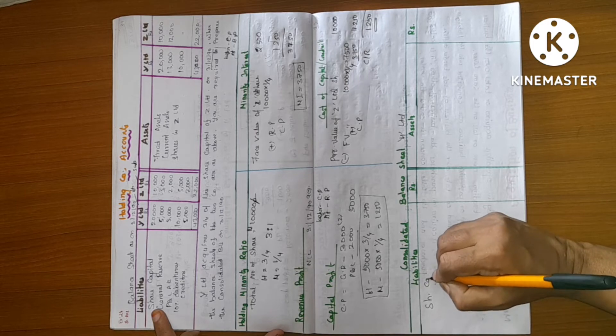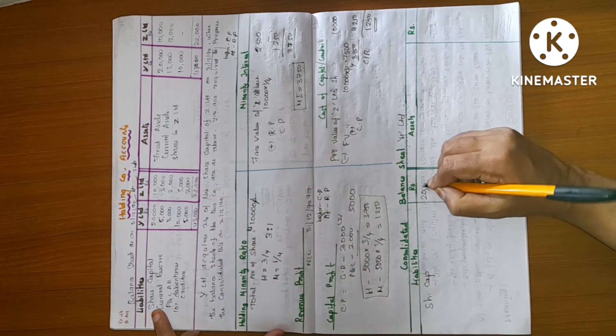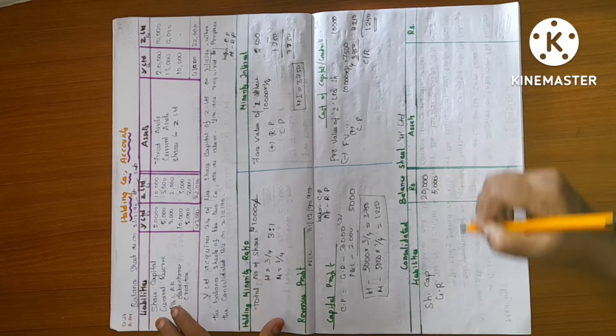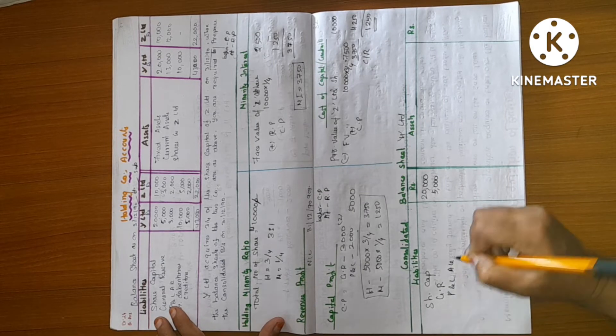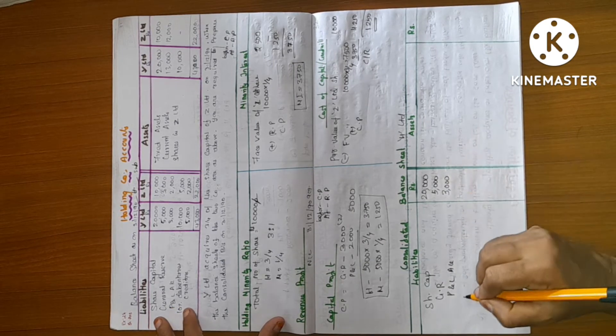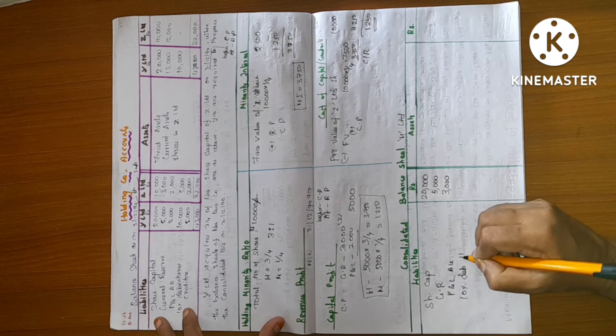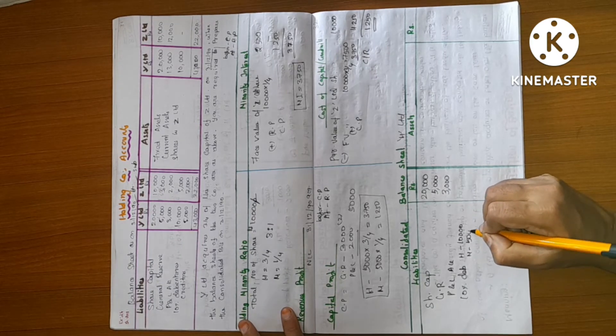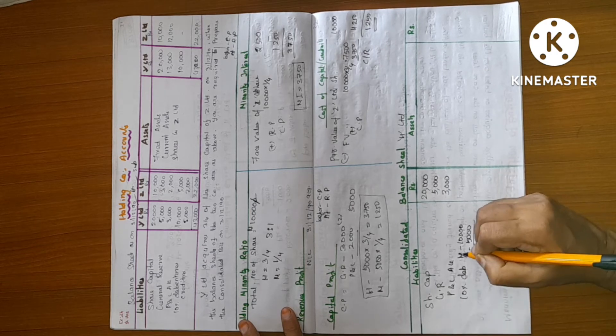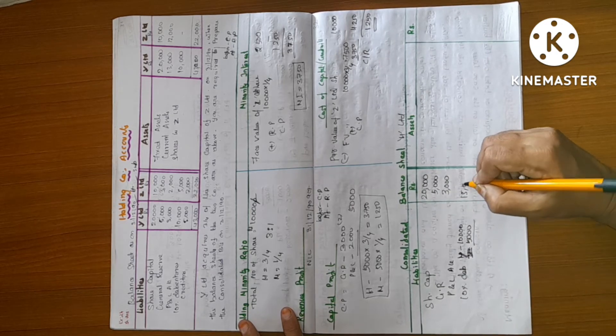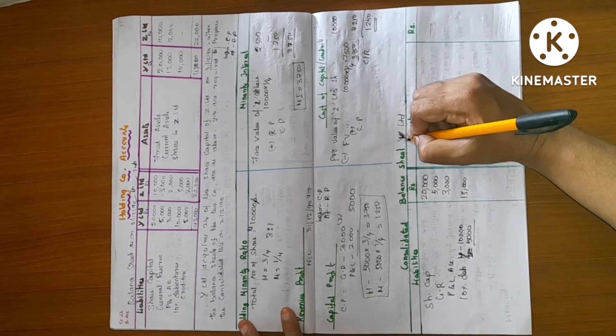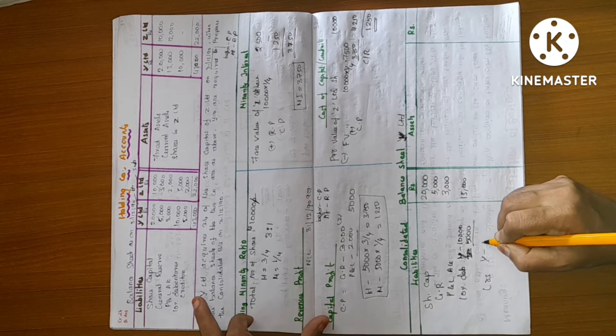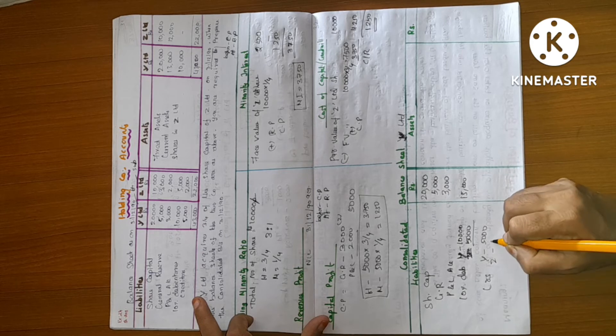Balance Sheet. Hedge Capital 20,000. General Reserve 5,000. Profit and Loss Account 3,000. 10% Debenture 10,000. Minority 5,000. Y 15,000. Credit Y 5,000, Z 2,000.